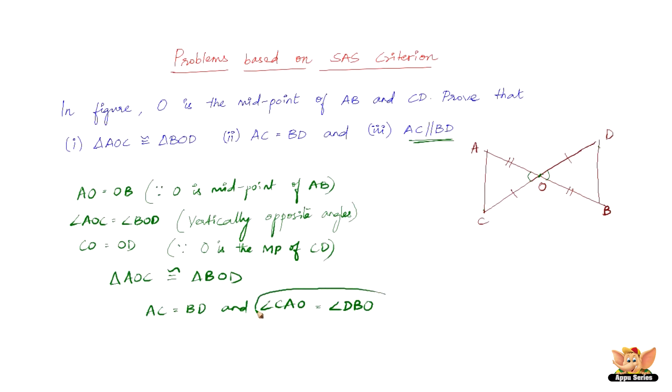Therefore, now this is the point for proving that AC is parallel to BD. AC is very well parallel to BD.